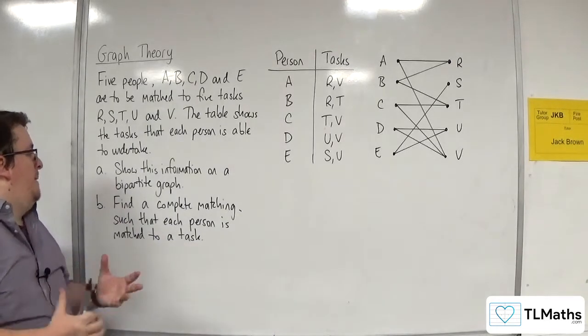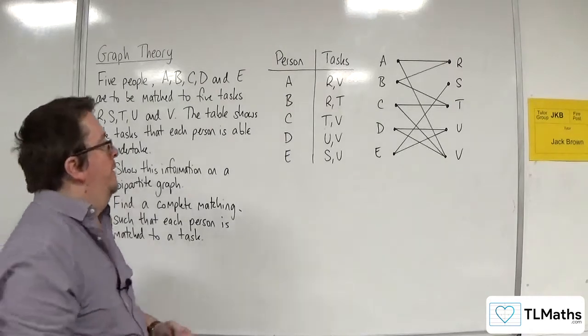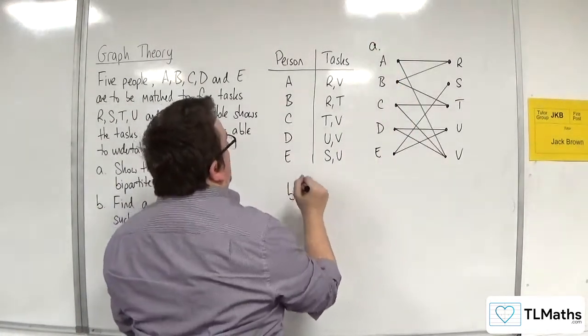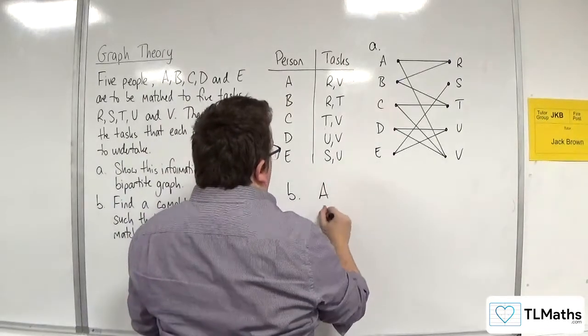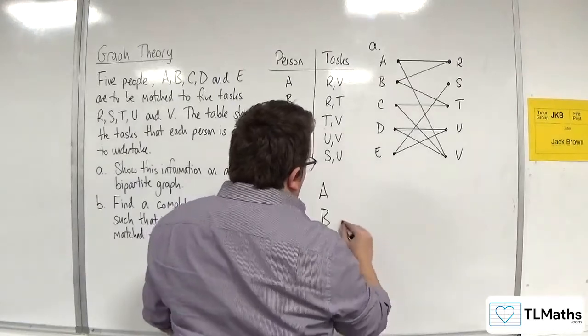Part B, find a complete matching such that each person is matched to a task. I need to match up A, B, C, D, and E with a task.